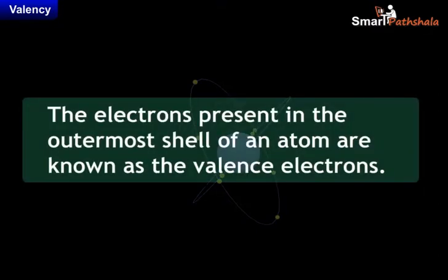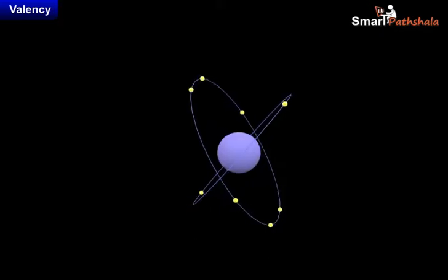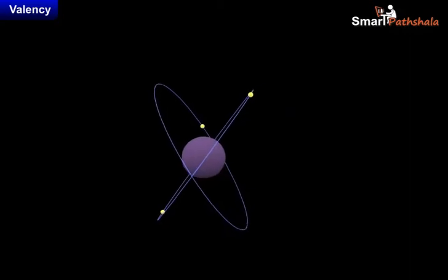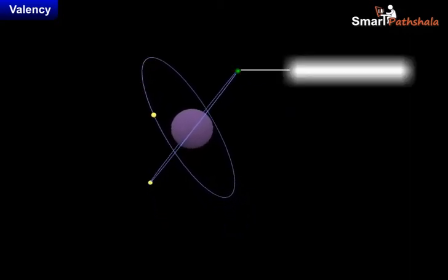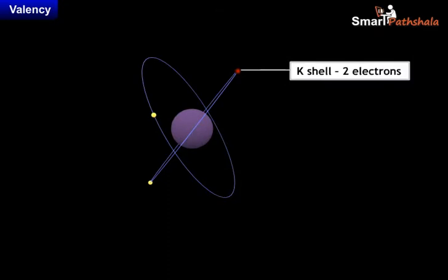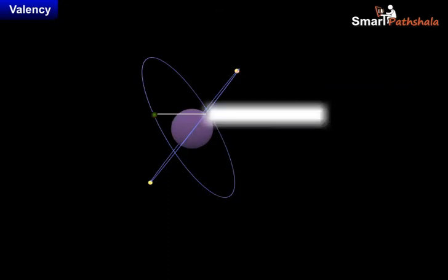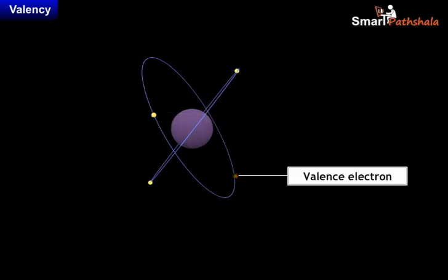The electrons present in the outermost shell of an atom are known as valence electrons. For example, a lithium atom has 3 electrons, in which 2 electrons are first filled in the K shell and the last 1 electron is filled in the L shell. This last electron is known as a valence electron.